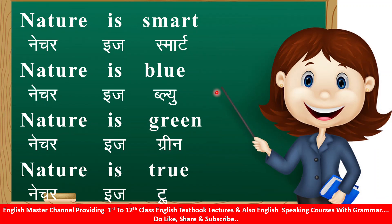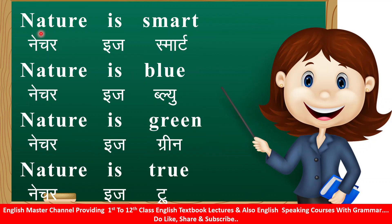The next stanza is here. Nature is smart. Nature is blue. Nature is green. Nature is true. Let me explain: nature is smart, nature is clear, nature is green, and nature is true — that means everything in nature is true.